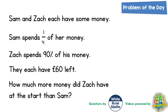Welcome, problem-solving fans, to another problem of the day. This one is about Sam and Zach spending some money. Sam spends a quarter of her money. Zach spends 90% of his money. They each have £60 left. How much more money did Zach have at the start than Sam?